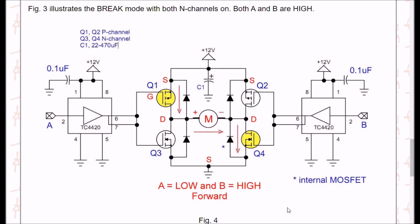Alright, now we have switched A low and B high. A low on A will turn on the P-channel Q1, and a high on B will turn on N-channel MOSFET Q4.